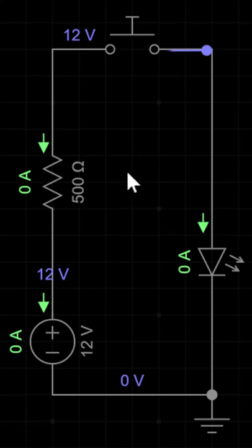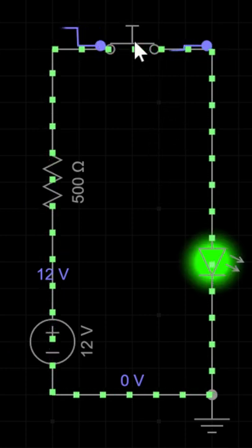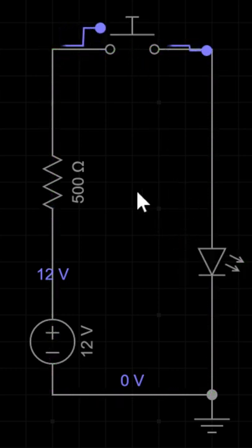Ever wonder what the difference is between a button and a switch? Well here I have a simple LED circuit with a button connected. When I press the button down, the LED lights. When I release it, it goes dim. Basically, you have to hold down a button for it to work.